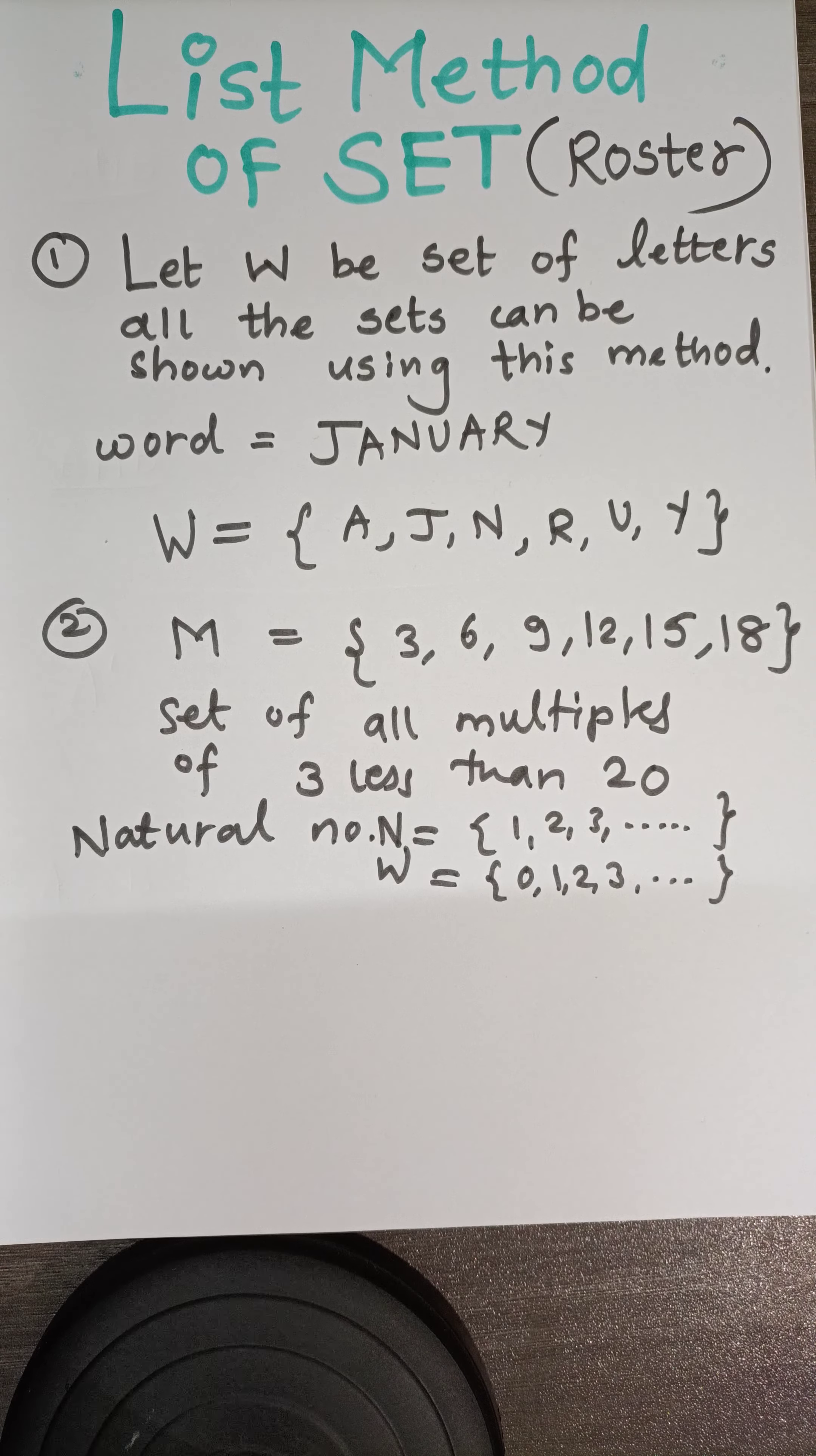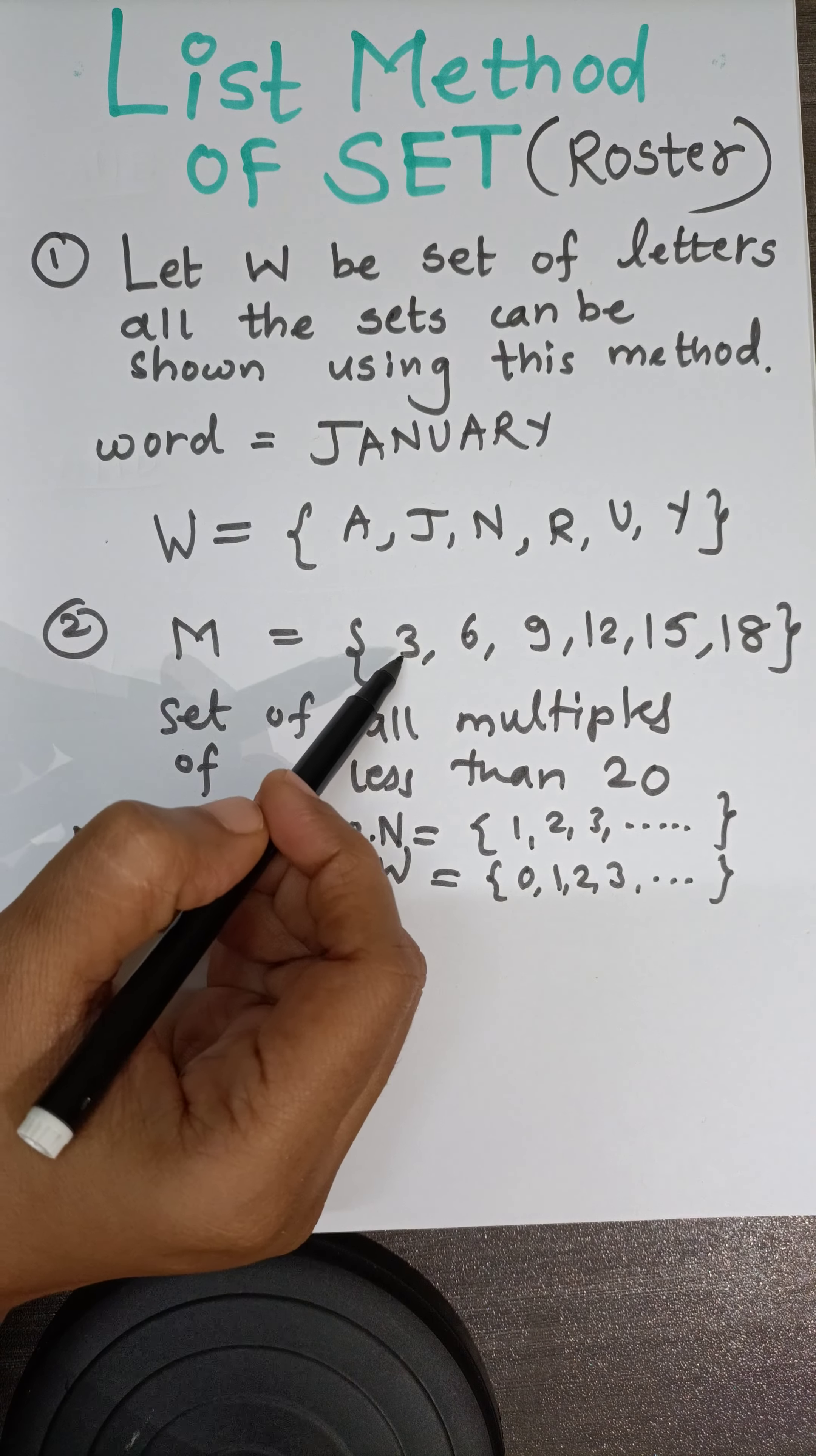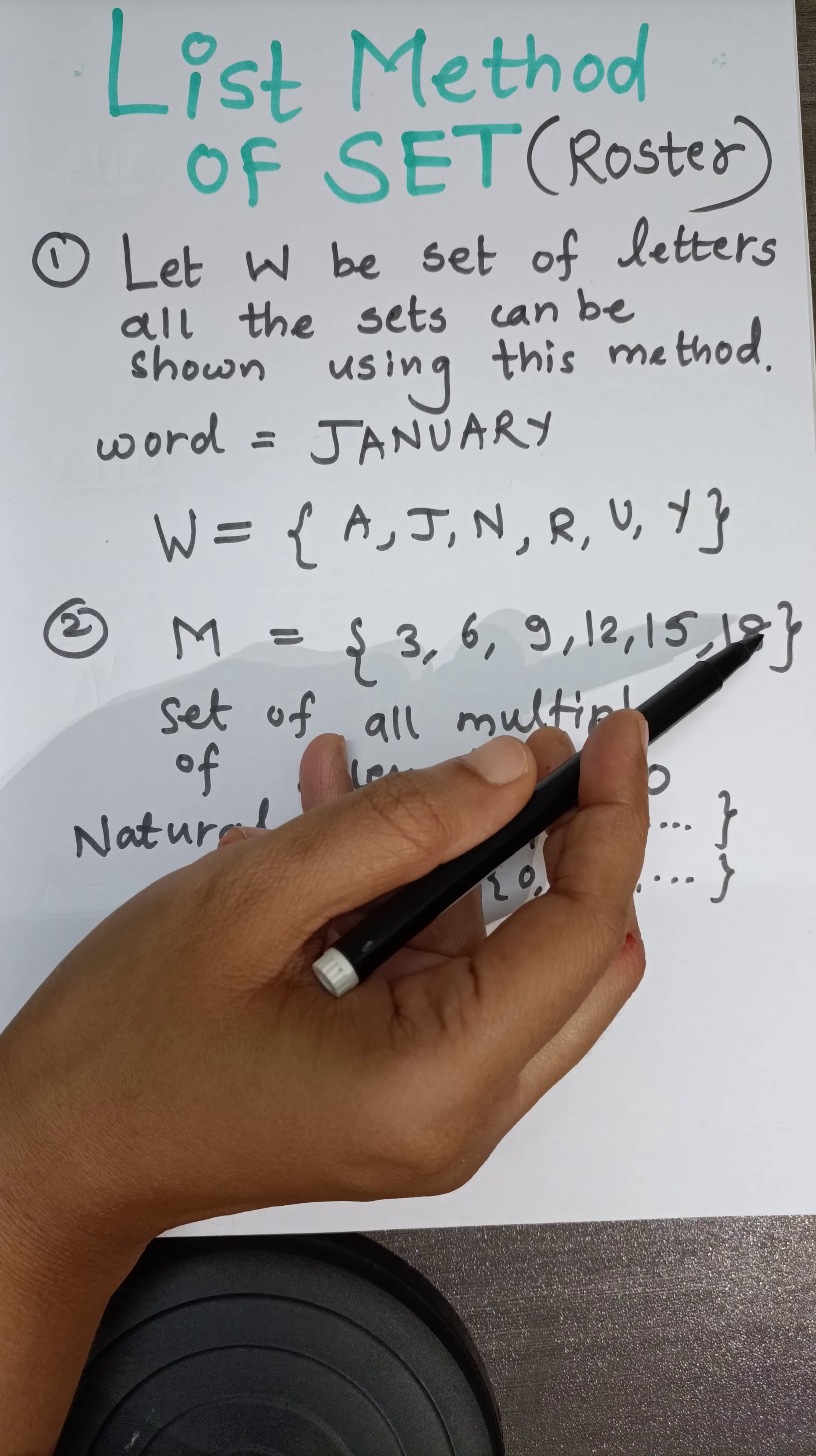Next, I want to represent a set of all multiples of 3 which are less than 20. So it will have 3, 6, 9, 12, 15, and 18.